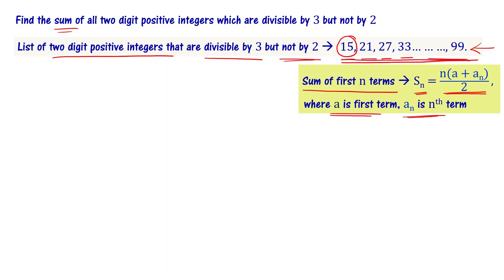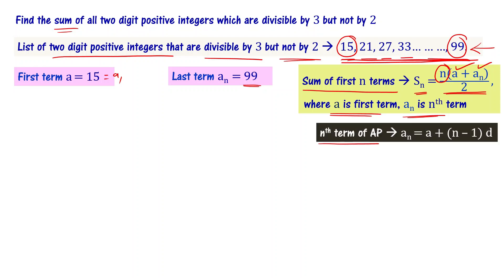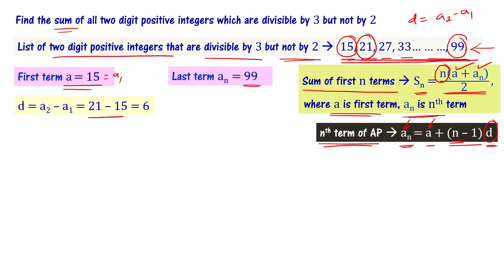The first term A = A1 = 15, and the nth term An = 99. Now, the common difference d = A2 − A1 = 21 − 15 = 6. The nth term formula for an arithmetic progression is: An = A + (N − 1) × d.